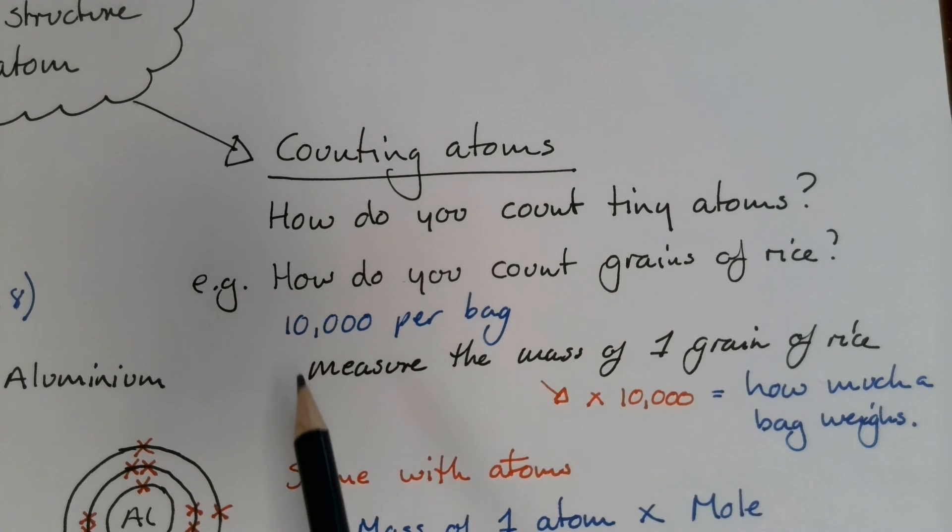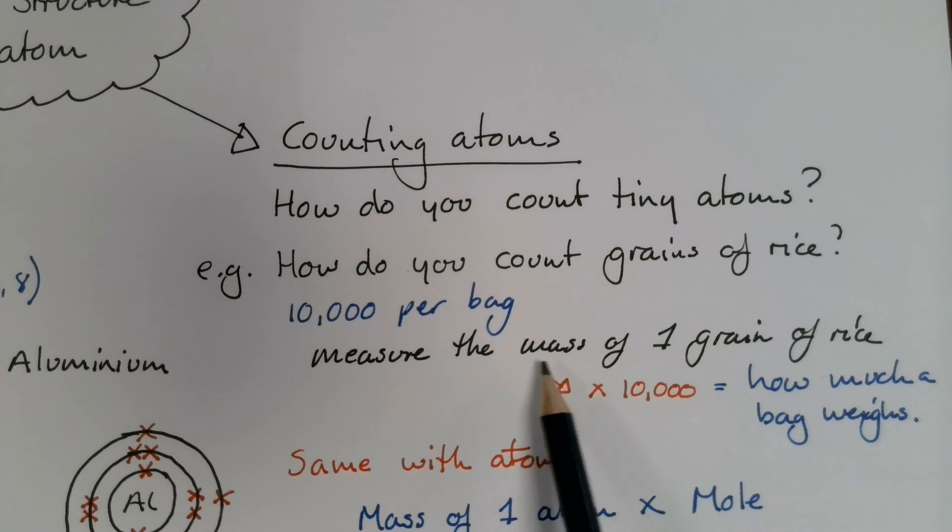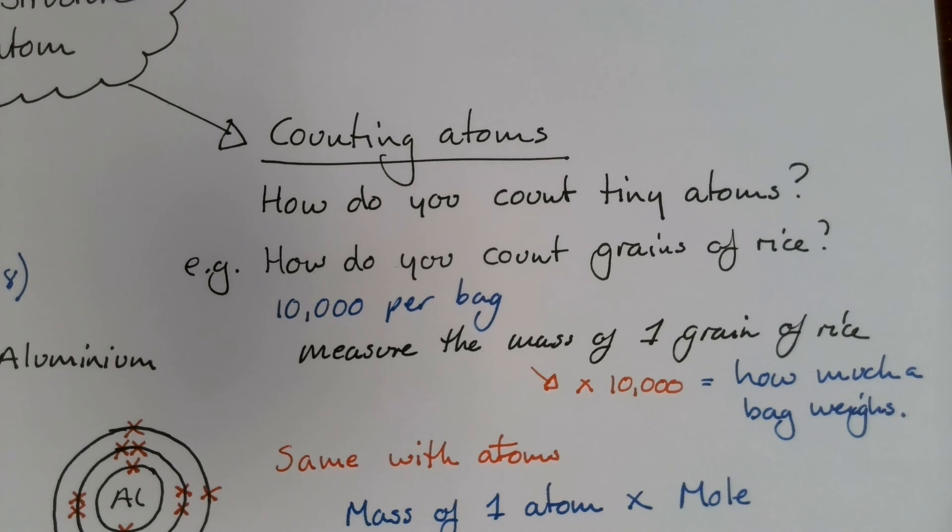Well, say you're a company that wanted to bag up grains of rice to sell to customers and you wanted ten thousand grains per bag. You wouldn't necessarily build a machine that counts ten thousand grains or employ somebody to do it. So what we do is we simply measure the mass of one grain of rice. If you know how much one grain of rice weighs, then multiply that number by ten thousand. And then you know how much a bag should weigh. That's it.